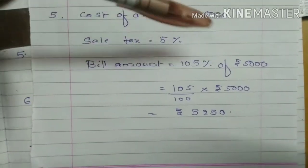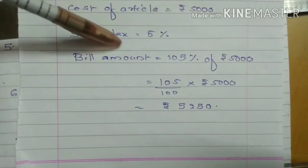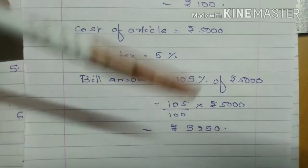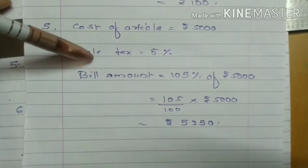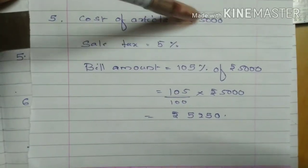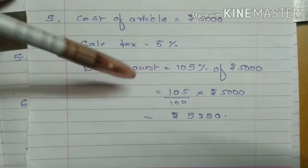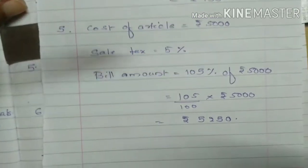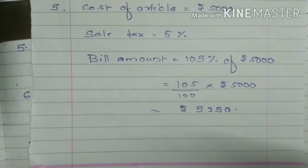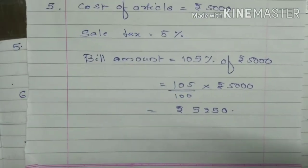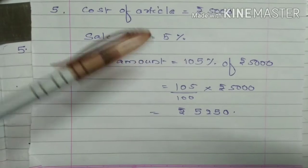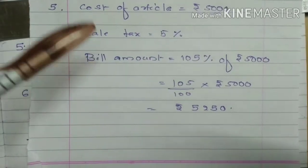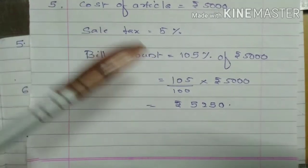100% means the same amount, and here an extra 5% is there. You have two ways you can do this. First, you can find out 5% of the amount and then add that number. But the easier method is: if it is tax, extra amount is coming, so you have to add. Suppose if discount is there, then 100 minus 5 will come. Here, tax is there, so 100 plus 5.